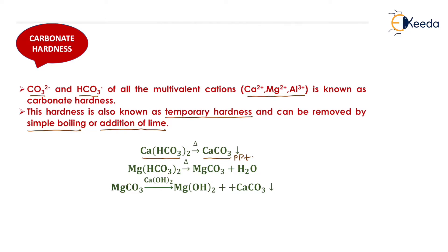Now consider the case where the hardness is due to magnesium bicarbonate. When we heat it, magnesium bicarbonate converts into magnesium carbonate and water. Magnesium carbonate is again a temporary hardness of magnesium, so we add lime to water containing magnesium carbonate. Calcium carbonate is then removed as a precipitate, and magnesium hydroxide remains dissolved. Since magnesium hydroxide does not create hardness, the carbonate hardness is fully removed.